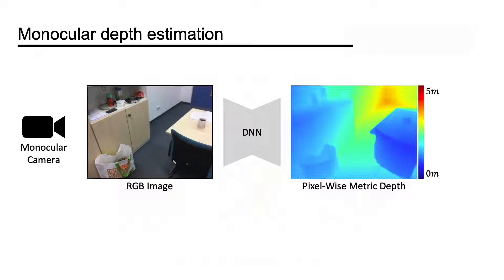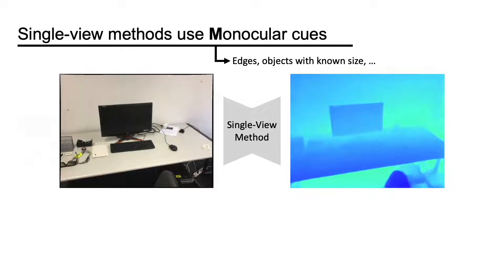Given a monocular input, our goal is to estimate the pixel-wise metric depth. The problem can be solved using single-view methods and multi-view methods. Single-view methods use monocular cues, such as edges and objects with known size.